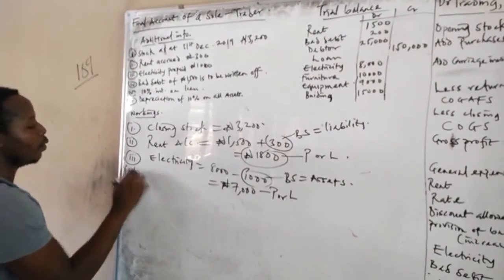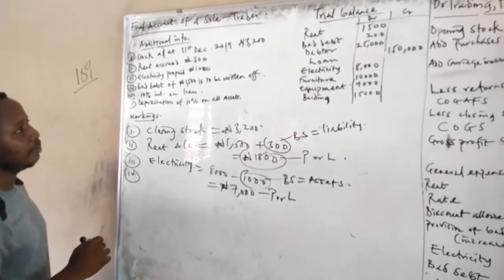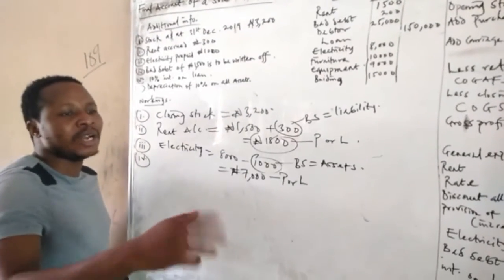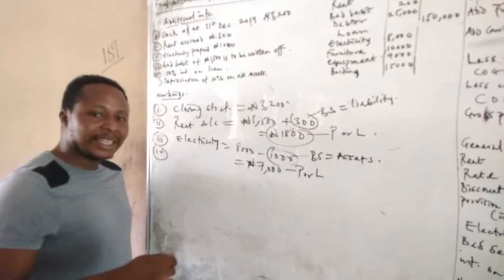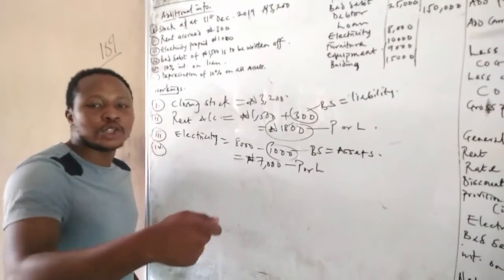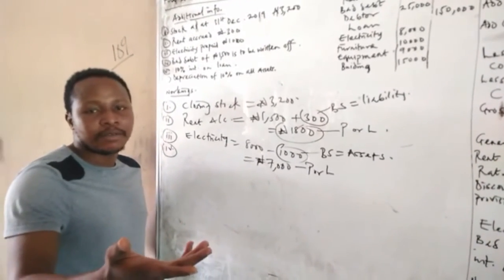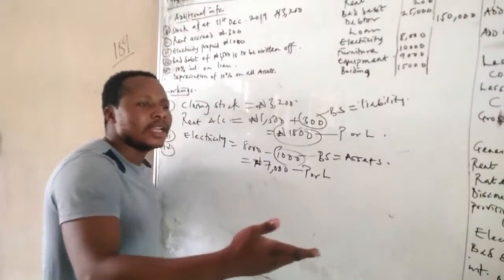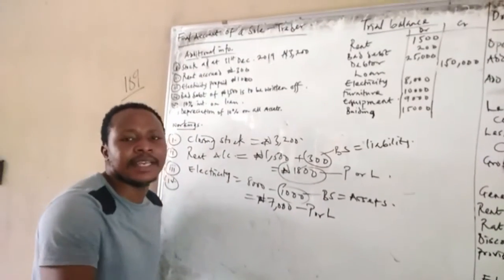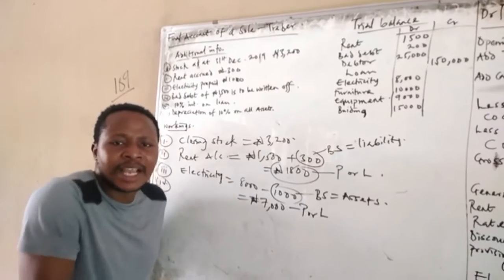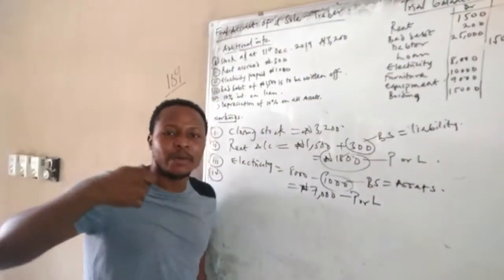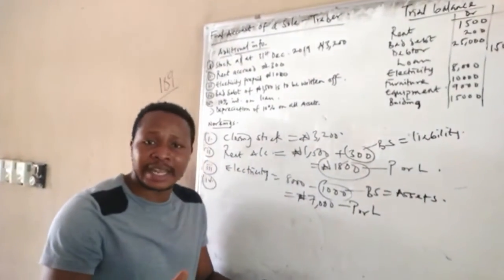Number four: we have a bad debt of 1,500 to be written off. Bad debt must be written off from your debtors. For example, if Mr. Janley Koko owes you 1,500 and you can't recover the money, you record it as a bad debt and subtract it from your debtors account.